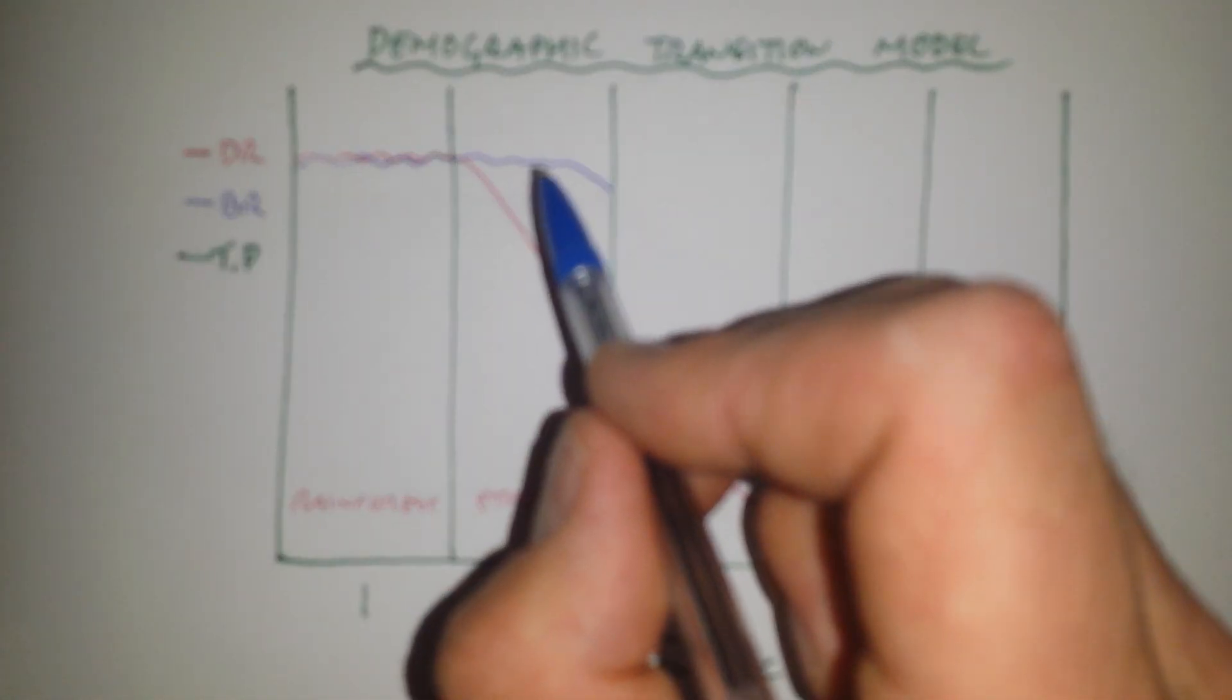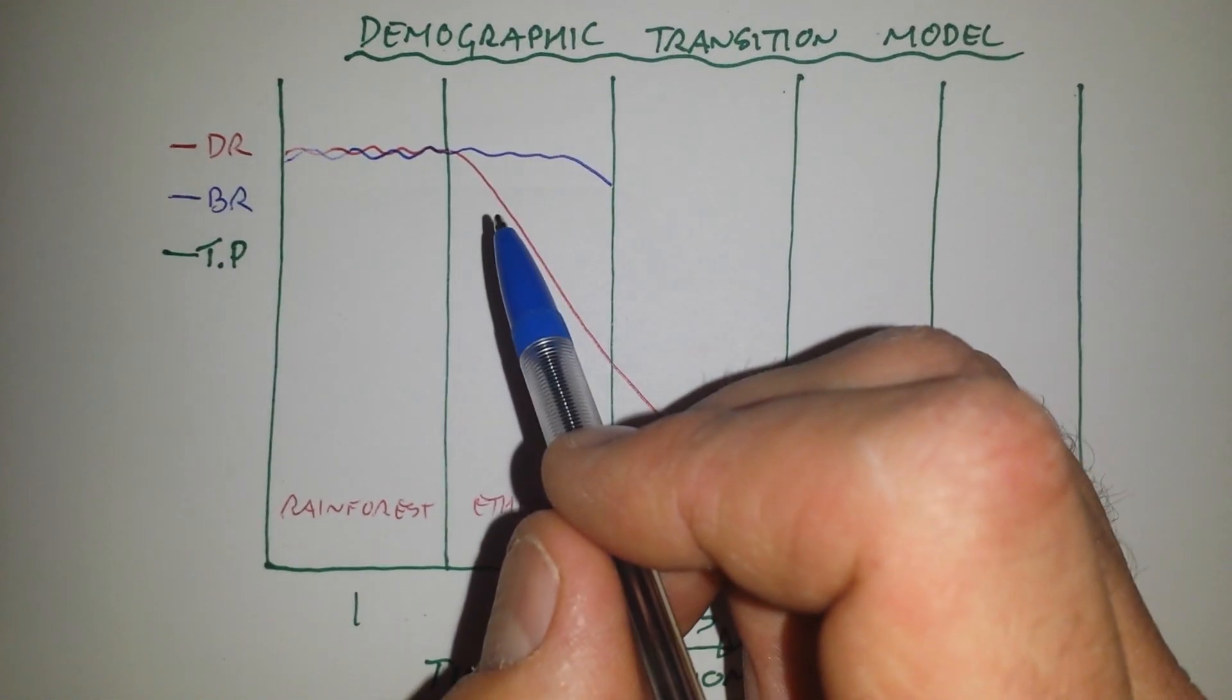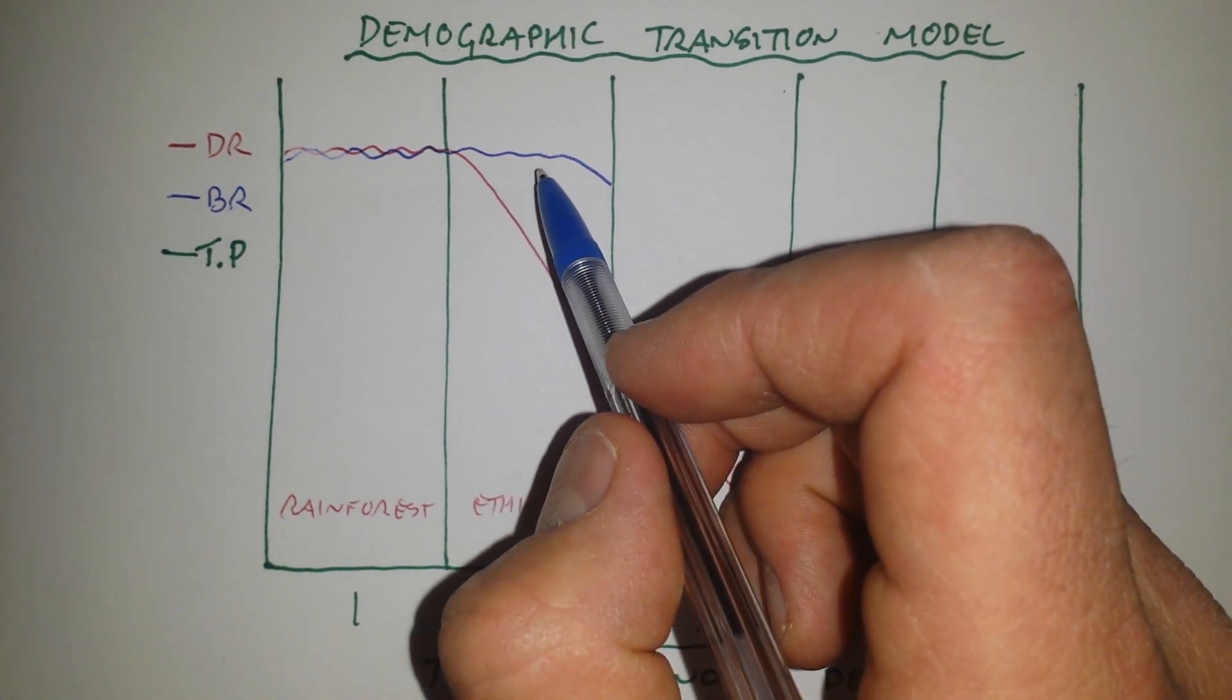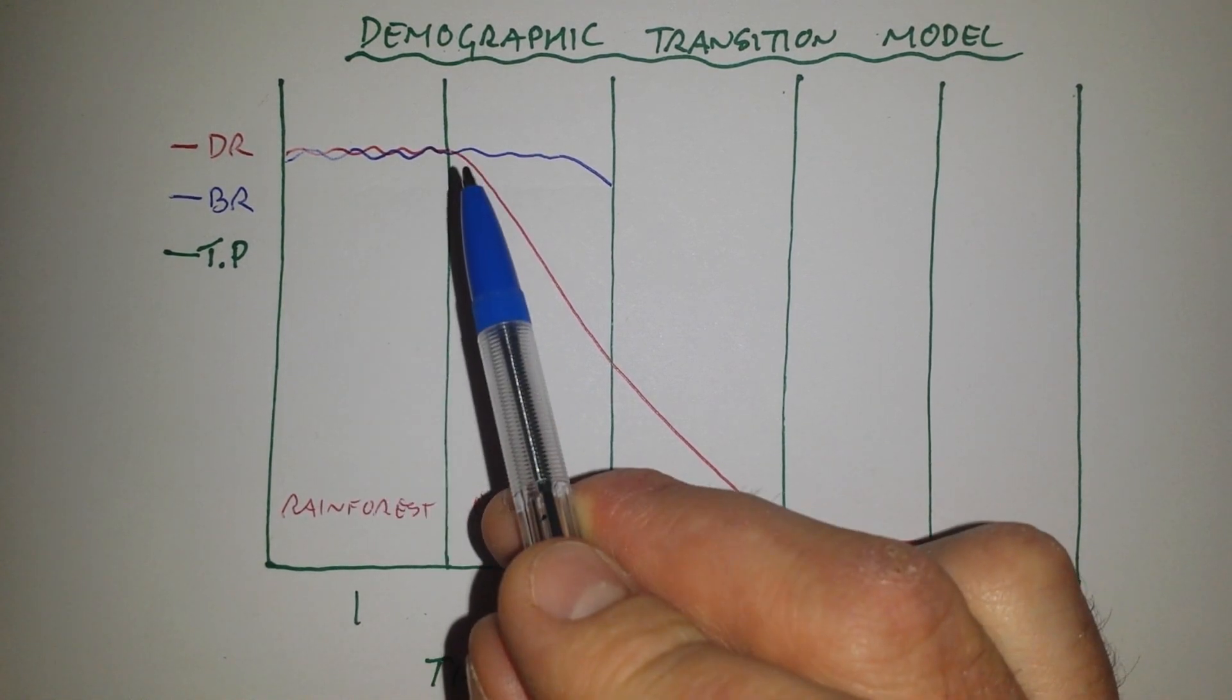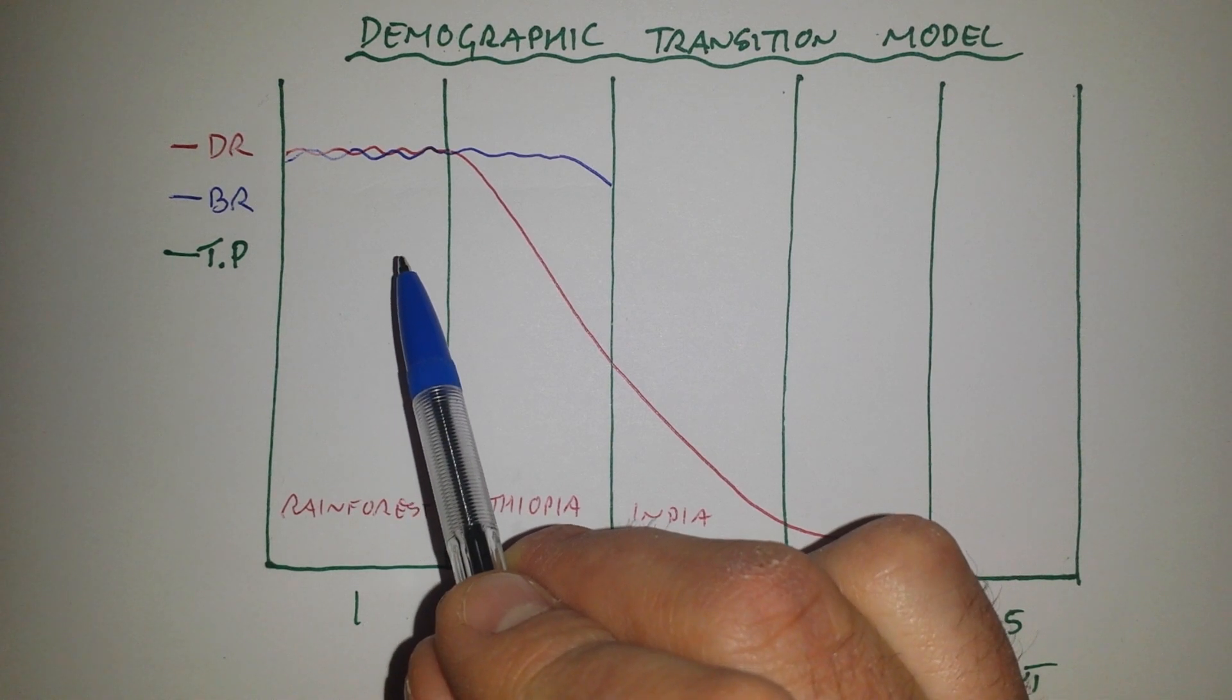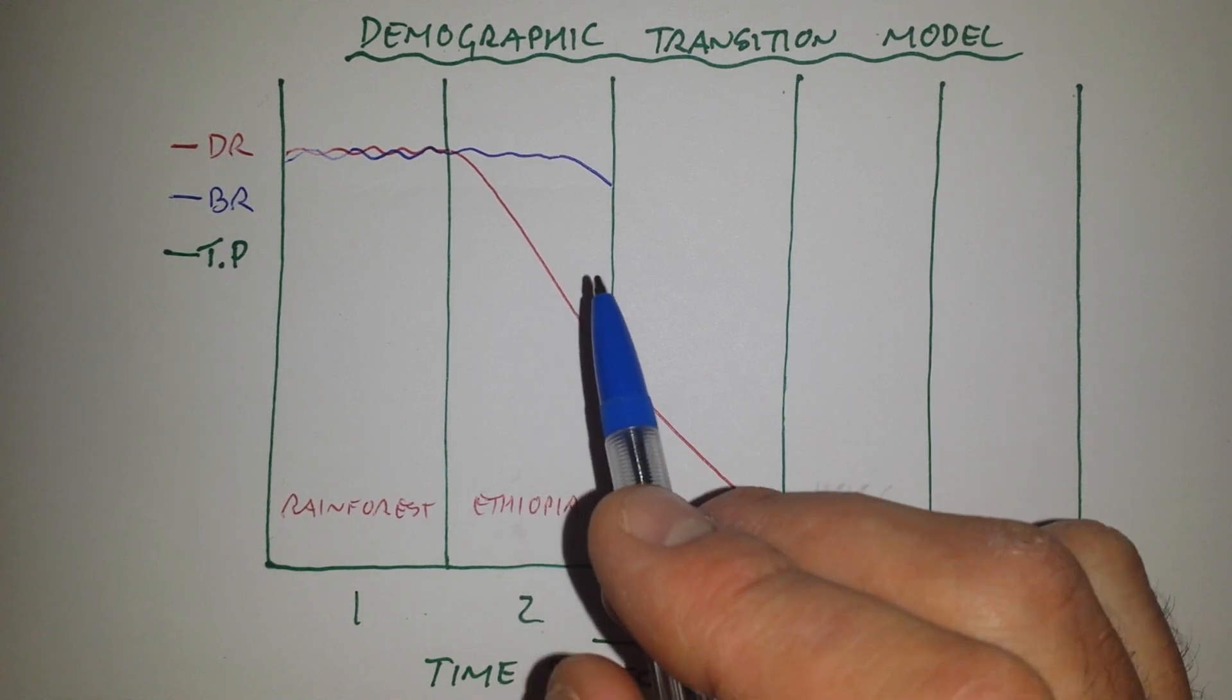So there is this lag time where people almost don't cotton on that their children aren't dying. In addition to that, just because they've started to develop and people are staying alive doesn't mean all of a sudden people aren't farming anymore. So they still need people to work on the land. And so it's an economic incentive and they haven't quite got the access to the contraception.